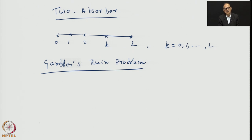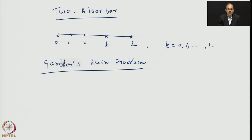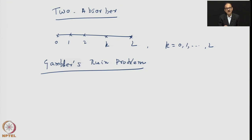Similarly, if he accumulates a total amount L, he immediately quits — he has decided to stop the game once he reaches L dollars. So both point 0, where the game stops due to ruin, and point L, where the game stops due to winning, act as absorbers because the process is truncated at both ends.